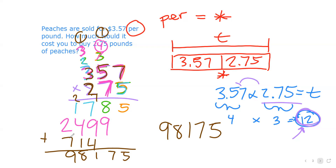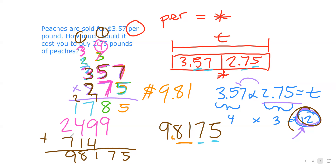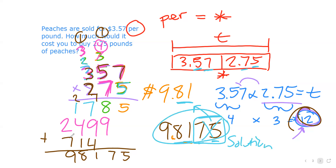We know the answer should be about twelve dollars. If I put the decimal here, that's less than one dollar — too small. If I put it here, that's nine wholes — close to twelve. If I put it here, that's ninety-eight — way too big. So the decimal goes to make nine point eight one seven five. Since this is money, we only use two decimal places, so the answer is about nine dollars and eighty-one cents. We can also verify by counting four total decimal places in the factors, but money only shows two.